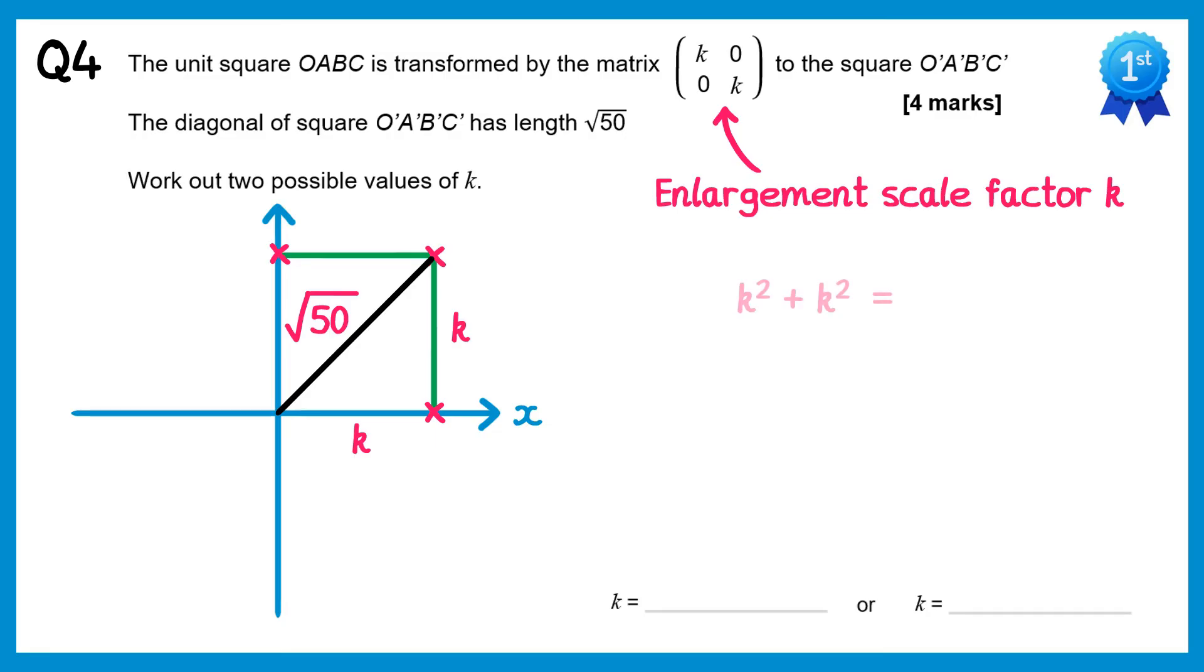So we have a right-angled triangle here, and we can use Pythagoras. So k-squared plus k-squared must equal square root 50-squared. 2k-squared equals 50. If we divide both sides by 2, we get k-squared equals 25, and then square root both sides, we get k equals plus or minus 5, so we get 5 and negative 5 as our answers.